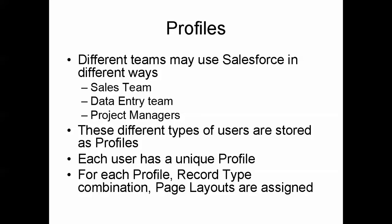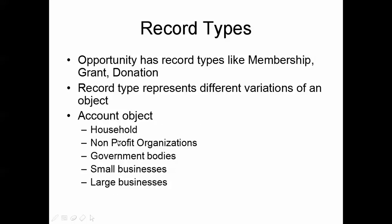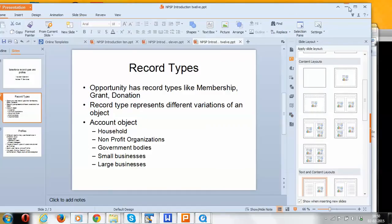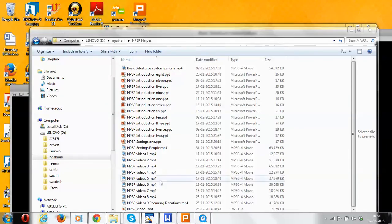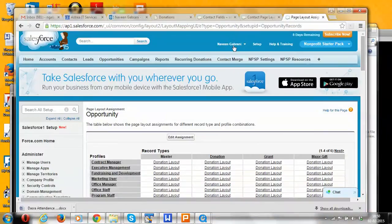The way the system is impacted by profiles and record types is that we, as system administrators, can specify that a given profile has a certain page layout for a certain record type. For example, we can say that when the sales team looks at a household or a nonprofit organization, a specific page layout should be used. We define this mapping, and then when the user logs in, the appropriate page layout is shown.